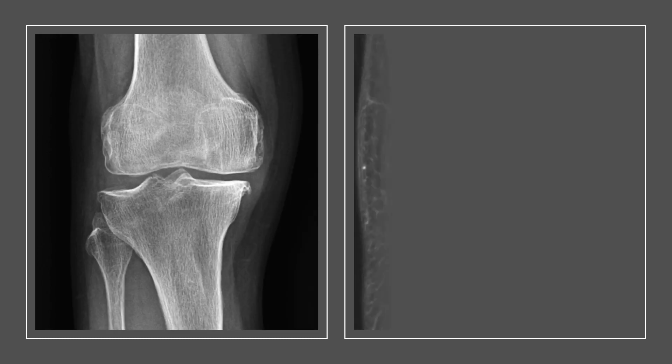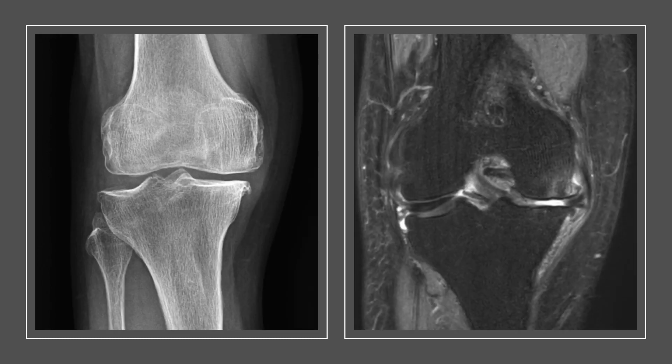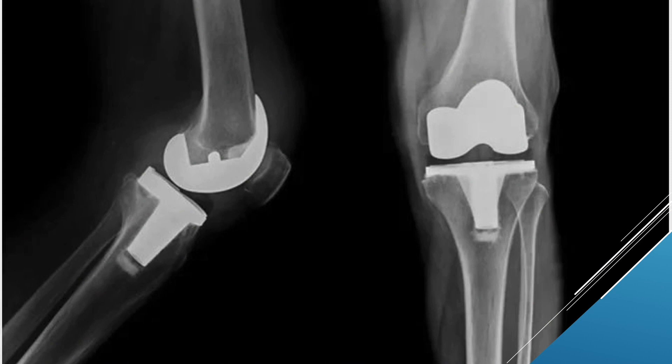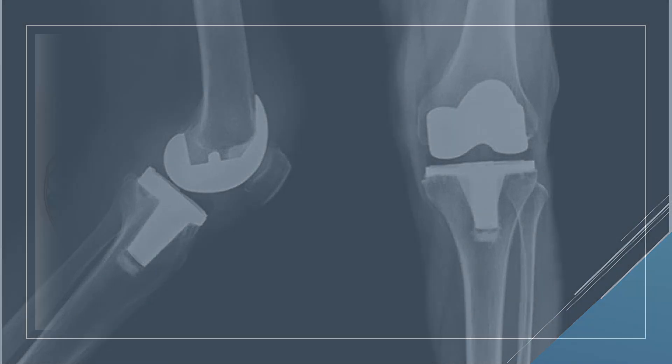The knee joint is the most common site of osteoarthritis. While joint replacement is considered an ultimate solution, its indication is limited to the end stage of osteoarthritis.